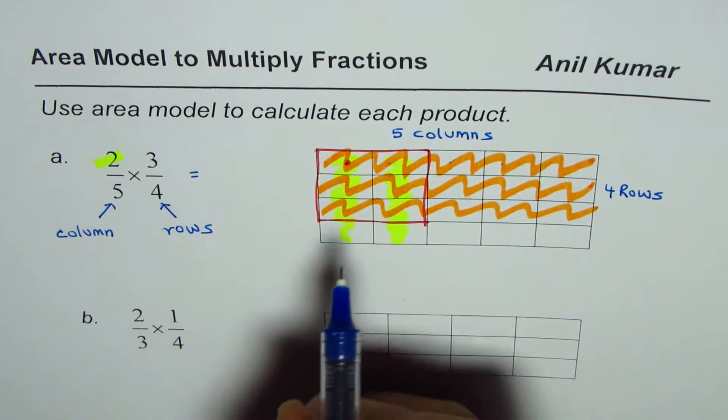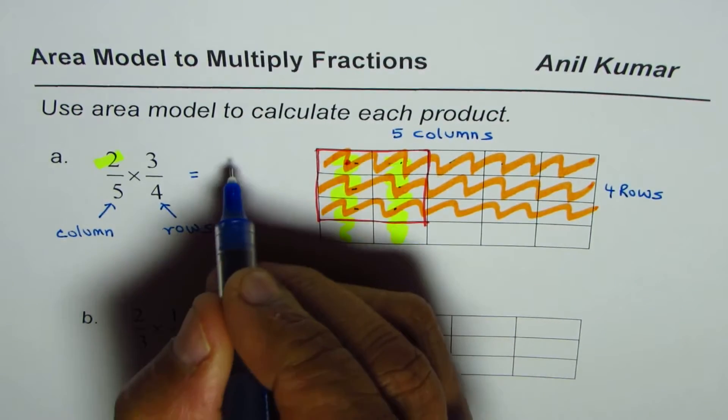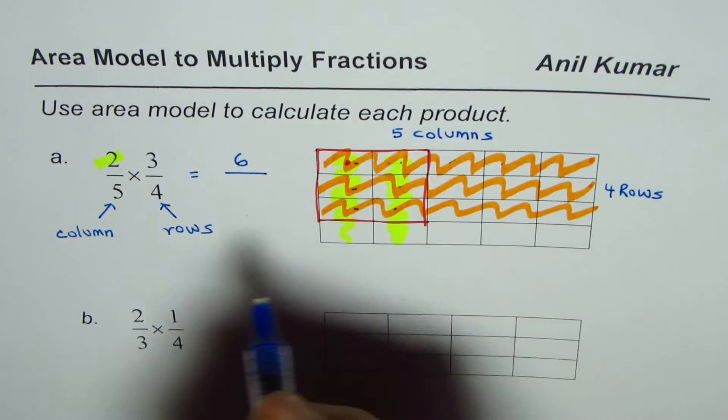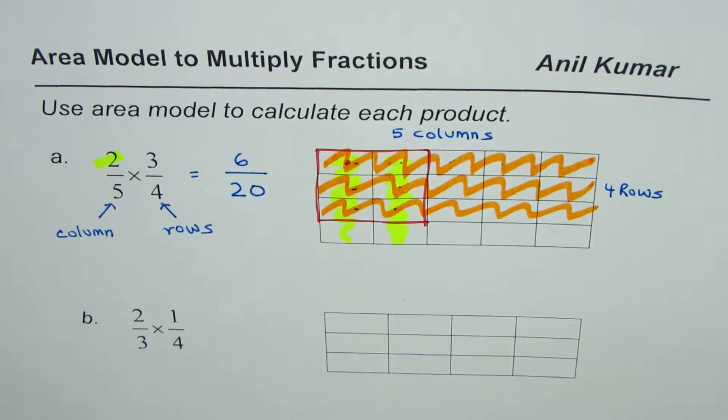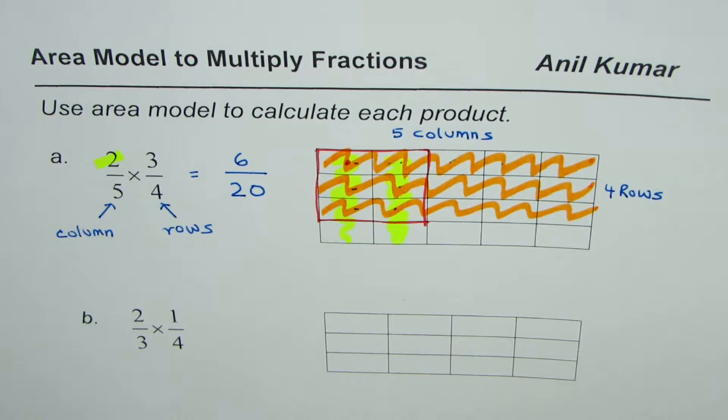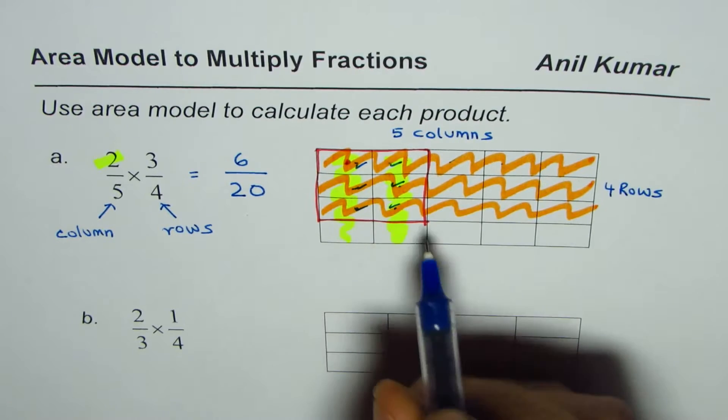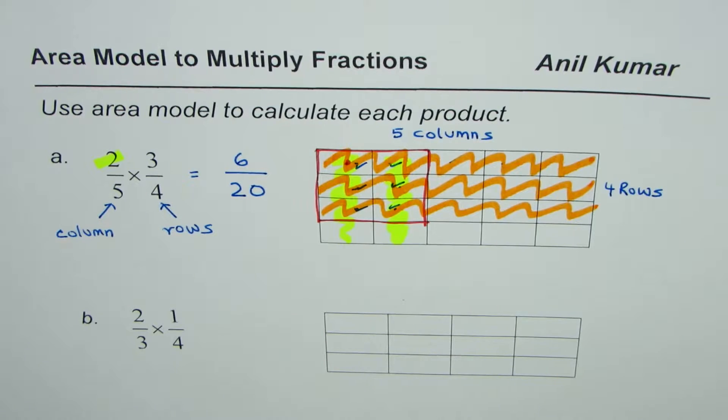Each part is one twentieth since there are twenty rectangles in this case. So what is the result? Two over five times three over four is equal to six out of twenty. We have selected one, two, three, four, five, six out of total of twenty.